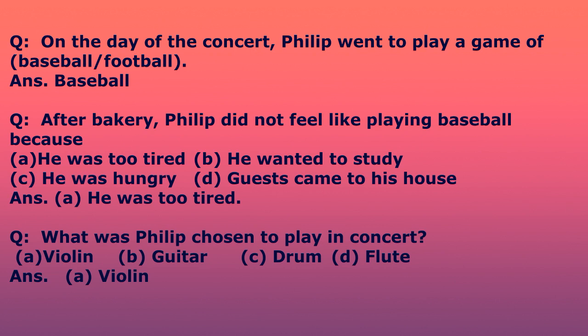Second question: after the bakery, Philip did not feel like playing baseball because — four options: he was too tired, he wanted to study, he was hungry, guests came to his house. The right option is he was too tired. Question 3: What was Philip chosen to play in the concert? Four options: violin, guitar, drum, flute. The right answer is violin. Philip chose violin to play in the concert.